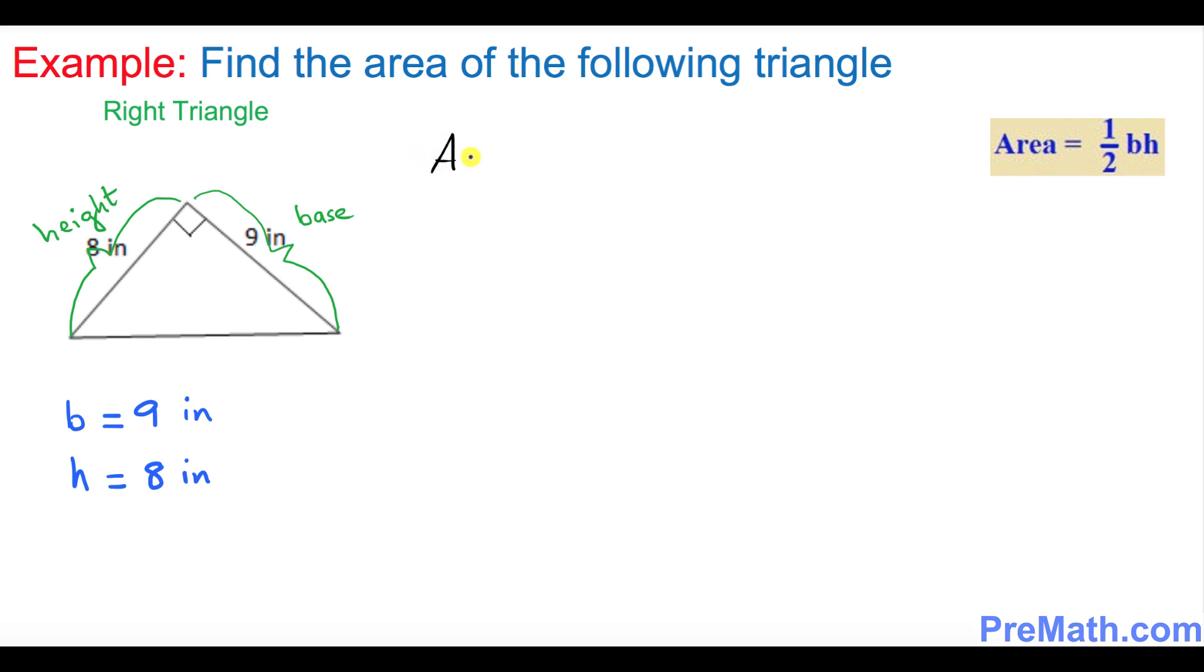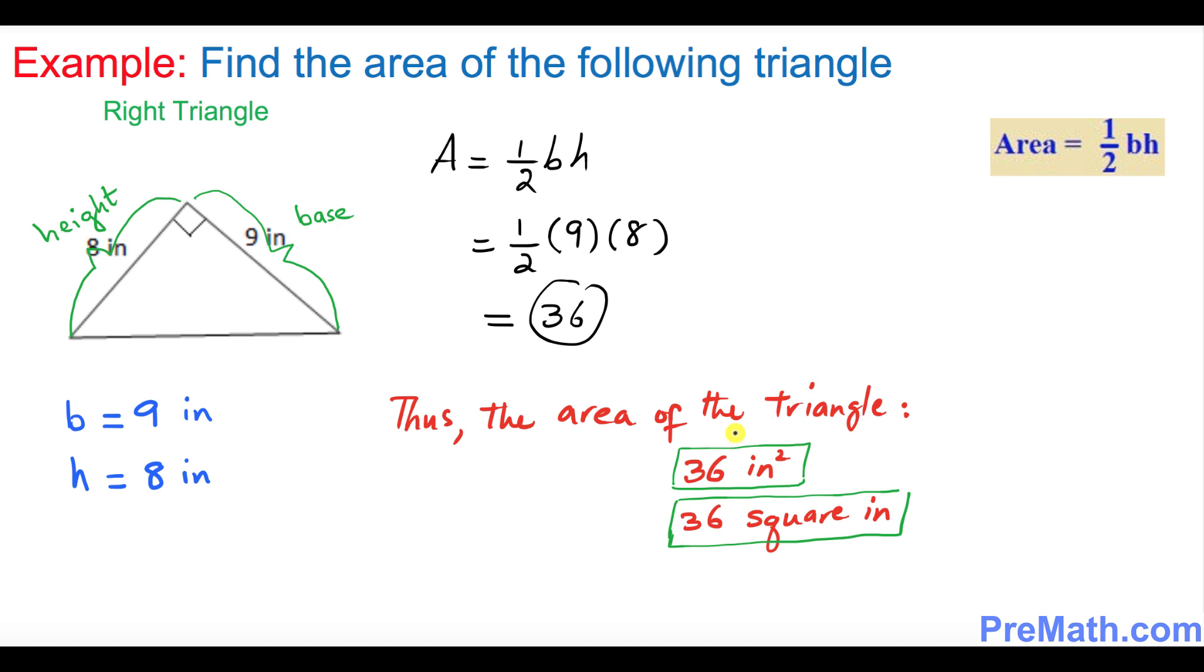Let's apply the formula: area equals to a half times base times height. One over two times base is 9 times height is 8 inches. If you simplify, that's gonna give you 36. Thus the area of this triangle is 36 inches squared, or 36 square inches—both are acceptable.